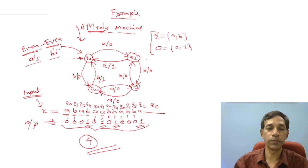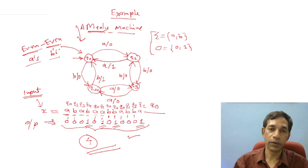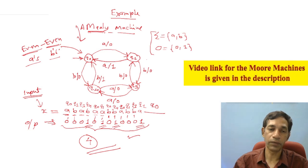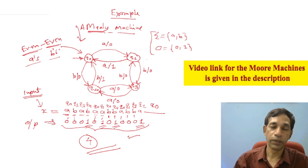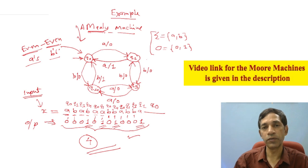This is one example of the Mealy machine. In other videos you will find the description of the Moore machine. The difference between the Mealy and Moore machine is only in the way they produce output: in the Mealy machine the number of output symbols equals the number of input symbols, whereas in the Moore machine you have one more output symbol than input symbols. However, both machines are equivalent — you can obtain one from the other.